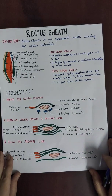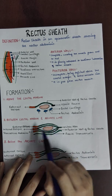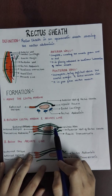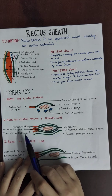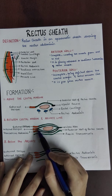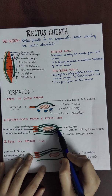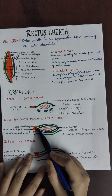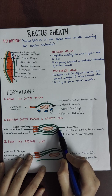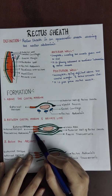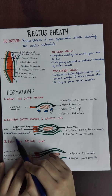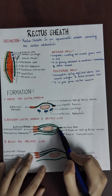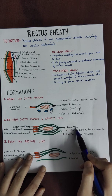Now let us look at between the costal margin and arcuate line. The anterior wall is formed by the external oblique muscle — it continues from above the costal margin, formed by its aponeurosis. The internal oblique muscle basically bifurcates into two parts: one is called the anterior lamina and one is called the posterior lamina. The anterior lamina forms the anterior wall of the rectus sheath, and the posterior lamina forms the posterior wall. Additionally, the posterior wall is formed by the aponeurosis of the transversus abdominis. All these aponeuroses fuse in the midline, which is called the linea alba.